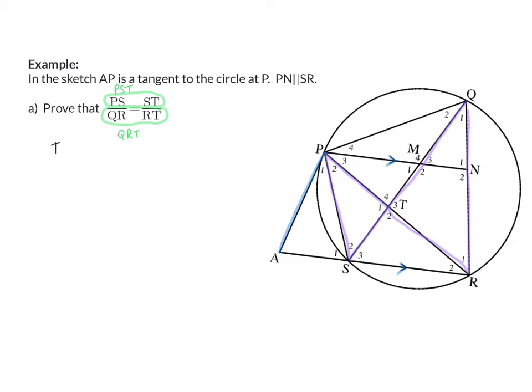I'm going to start saying that we are going to work in triangle PST and triangle QRT. To prove them similar, we need three pairs of corresponding angles that are equal. T1 and T3 are equal because they are vertically opposite angles.